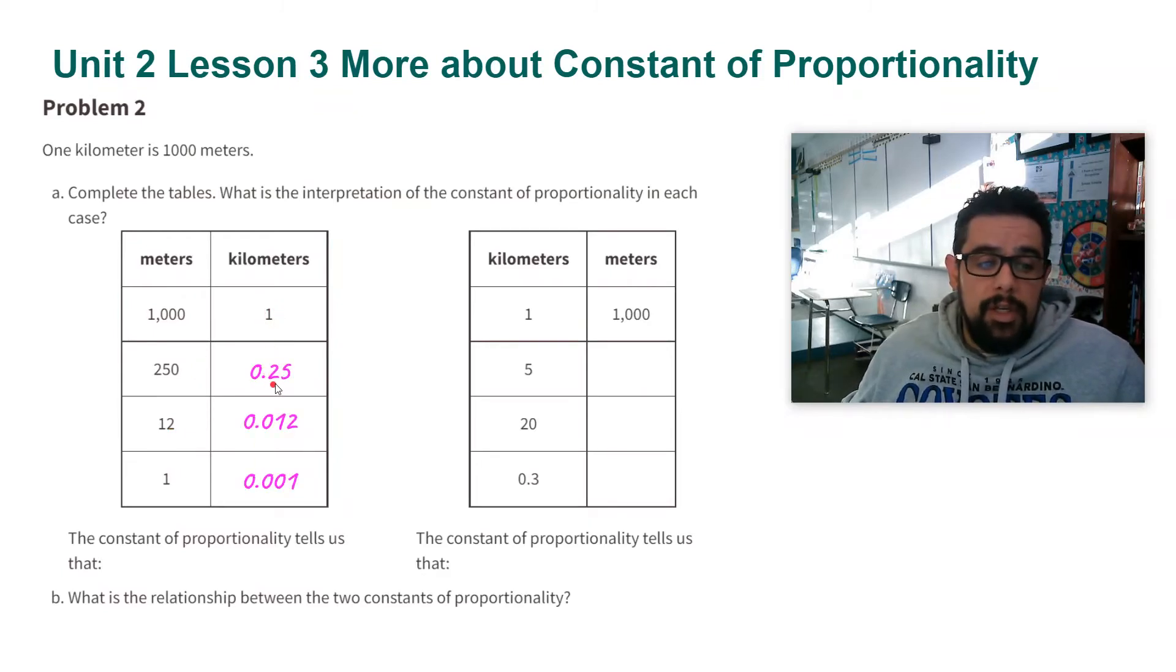So I get 0.25 here, 0.012, and 0.001. For the other table, notice it's the same number this way. One kilometer is 1,000 meters, but now it's going the other way, so I'm going to multiply by 1,000.